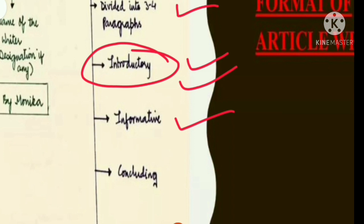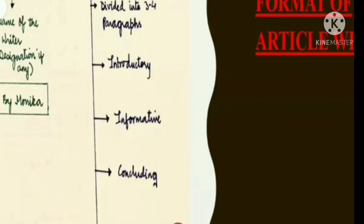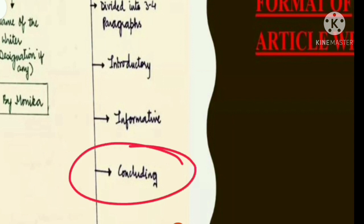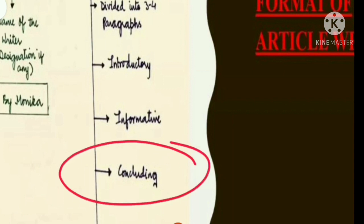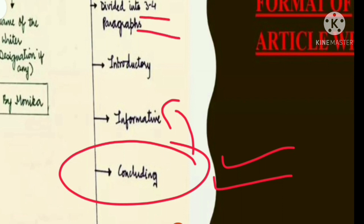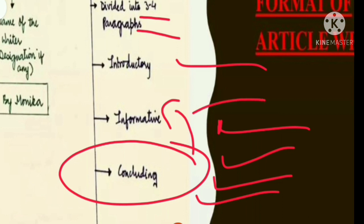At last you are going to write the concluding paragraph. In the conclusion you must mention a solution to the problems you have discussed in the second or third paragraph. Ideally there should be three paragraphs: introduction, information regarding the topic, and conclusion. But if you wish, you can segregate the information part into different paragraphs.